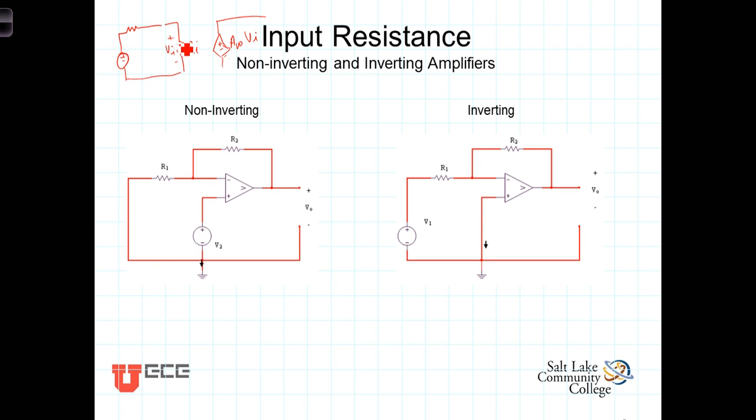In order to make it so that this voltage here is a significant portion of this, we want the input resistance here to be significantly larger than the source resistance. In fact, ideally this input resistance would be infinite.